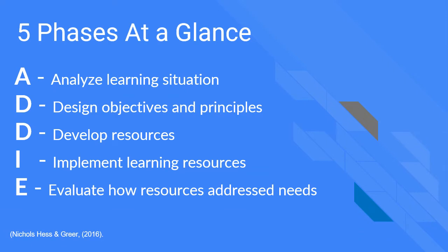There are five phases for ADDIE. A is for analyze — analyze the learning situation. D is for design — design objectives and principles. D is for develop — develop your resources. I is for implement — implement learning resources. And E is for evaluate — evaluate how resources address your needs.